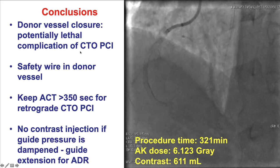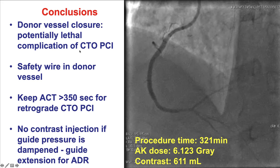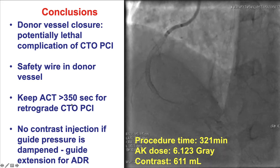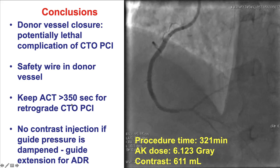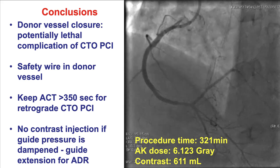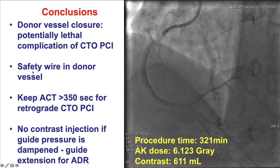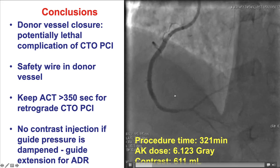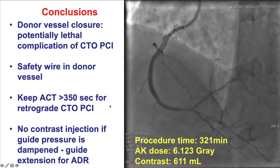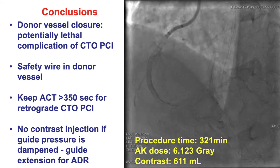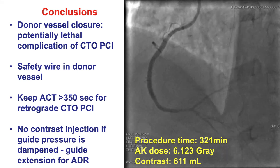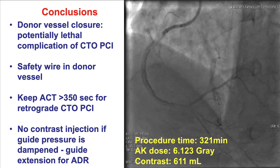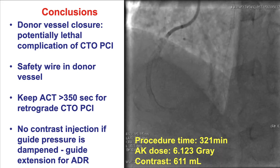Donor vessel closure is a potentially catastrophic complication. To minimize it, keep the ACT high — more than 350 seconds for retrograde procedures. Also keep a safety wire in the donor vessel so that if a problem occurs, treatment can be performed easily. If there are donor vessel issues such as thrombosis, treat with thrombectomy; if it was dissection, stenting might be required. Thank you very much.